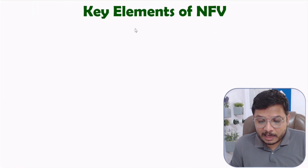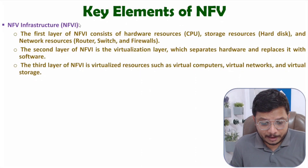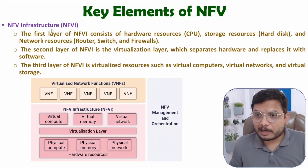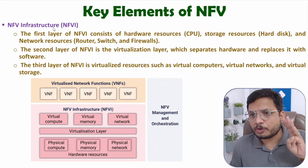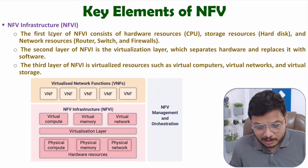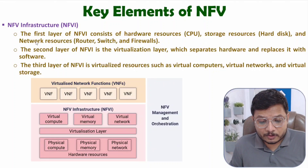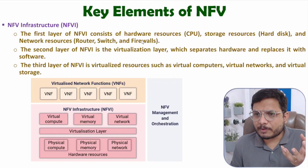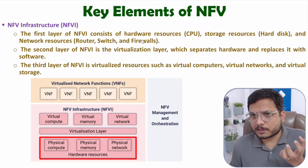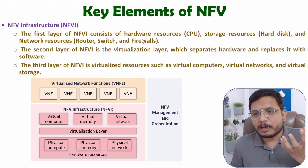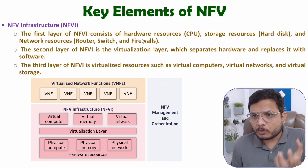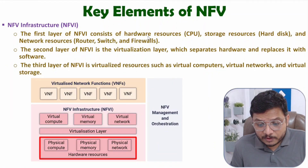The first key component of NFV is NFVI — Network Function Virtualization Infrastructure — which has three layers. The first layer contains hardware resources: CPU, storage resources like hard disk, and network resources like routers, switches, and firewalls. These are the physical resources in the first layer of NFVI.